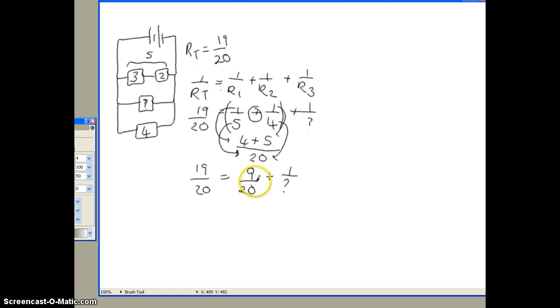So now, this is where the algebra comes in. We need to take this term over the equal sign. And when you do that, you need to reverse what it is doing over here. So here it's a plus. So we will subtract it over this side. And 19, take away 9, is 10.